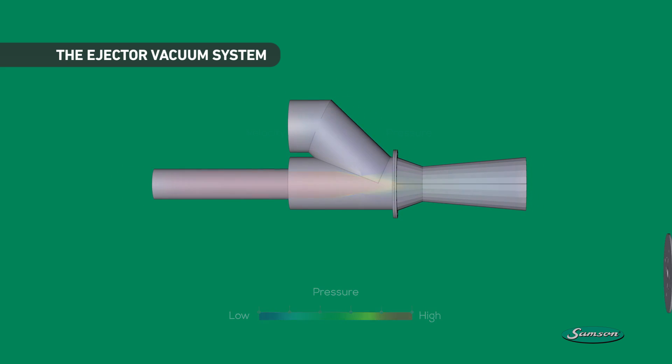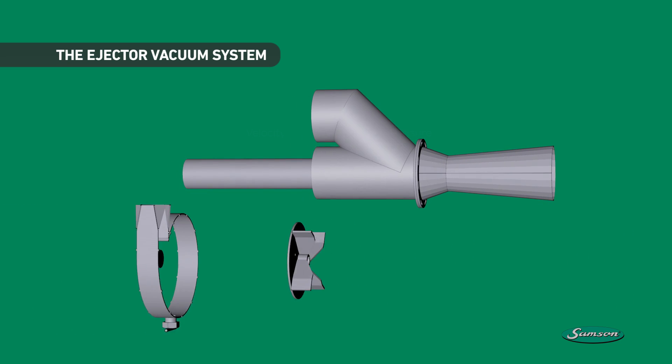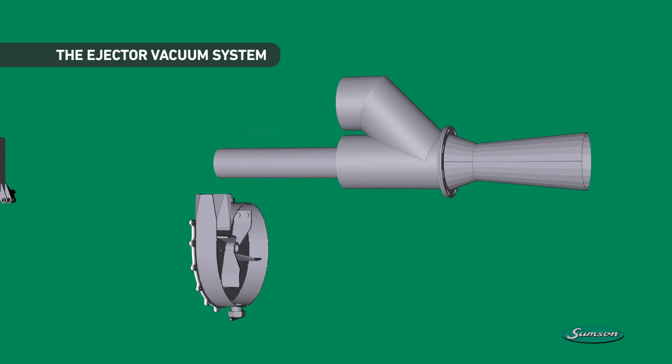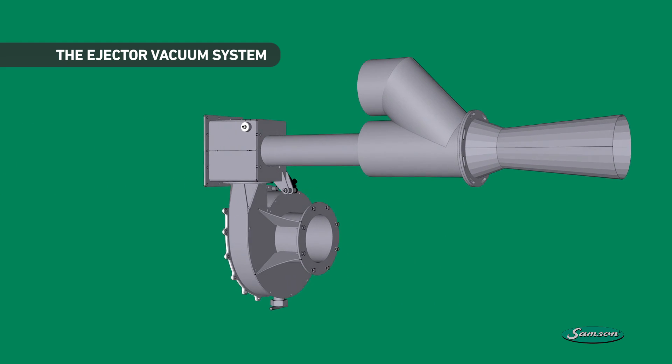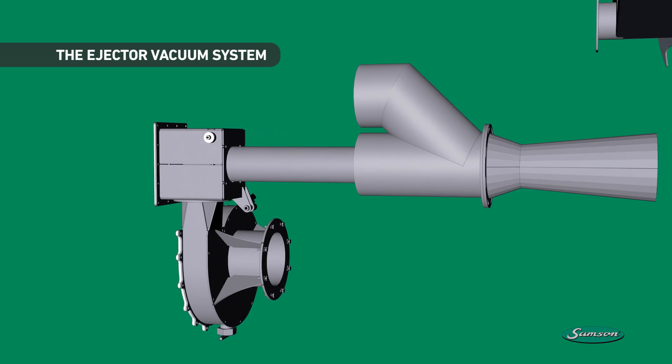The Samson Ejector Vacuum System uses a robust centrifuge pump with a heavy-duty semi-open impeller to drive the flow of fluid to the ejector. A centrifuge pump like this needs priming and must be fully submerged to function.